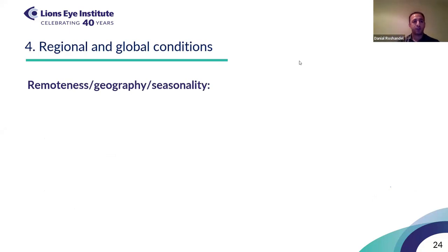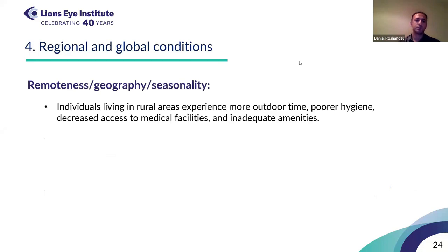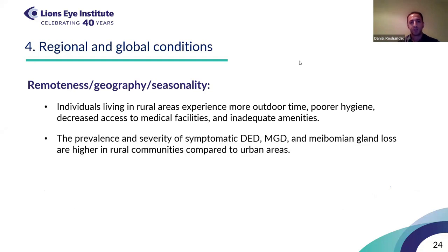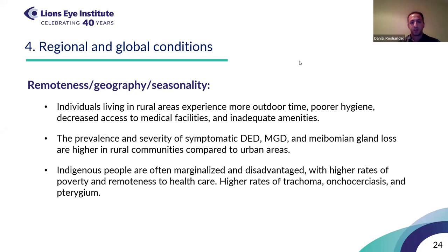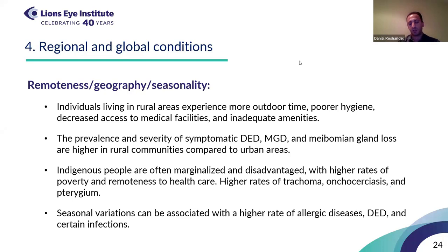The next group of societal factors includes regional and global conditions. Remoteness is a very important factor in access to healthcare for ocular surface diseases — those living in rural and remote areas have more outdoor time, poorer hygiene, and decreased access to facilities. The prevalence and severity of dry eye disease, meibomian gland dysfunction, and other ocular surface conditions was higher in rural communities compared with urban areas. Indigenous people are at higher risk of trachoma, onchocerciasis, and pterygium due to remoteness and higher rates of poverty. Seasonal variations also play a role — allergic diseases are more prevalent in spring, dry eye disease may worsen in winter, and certain infections are higher in certain climates.